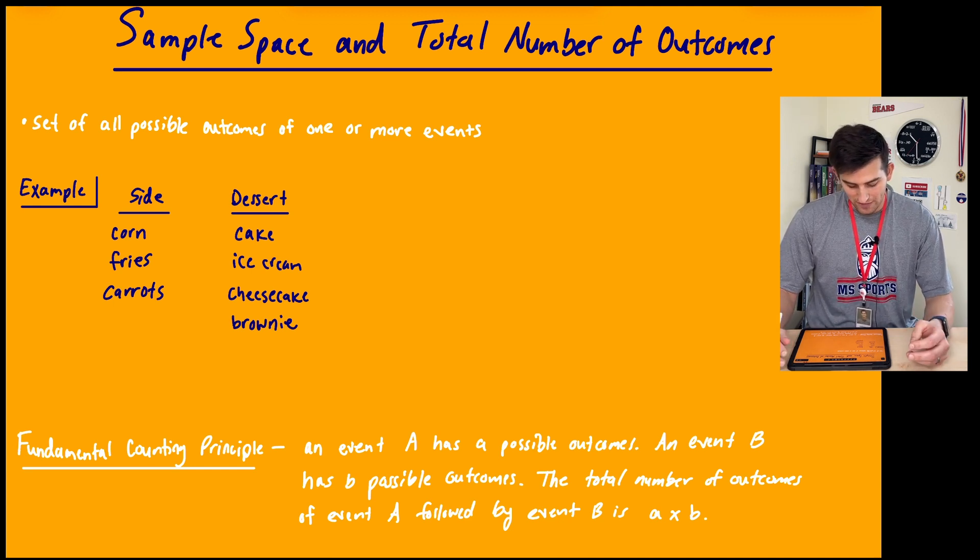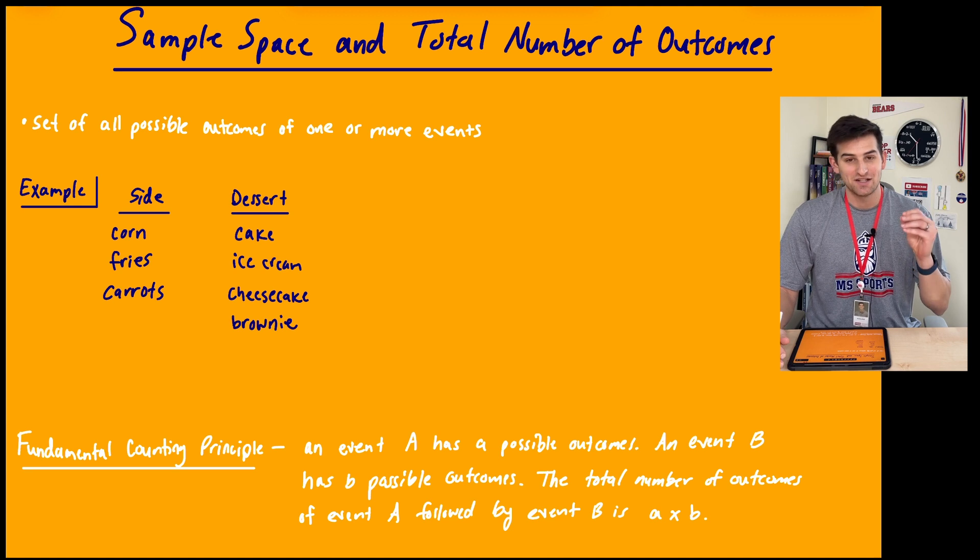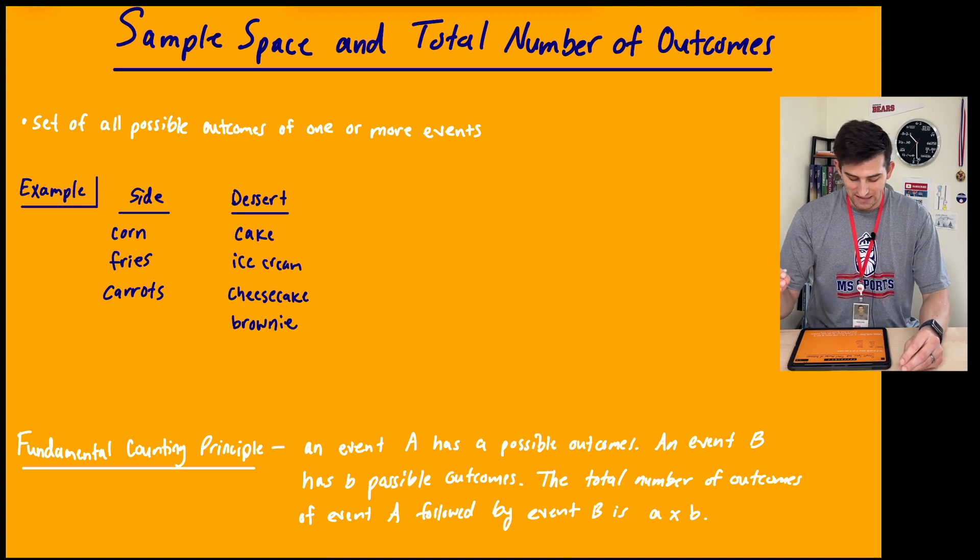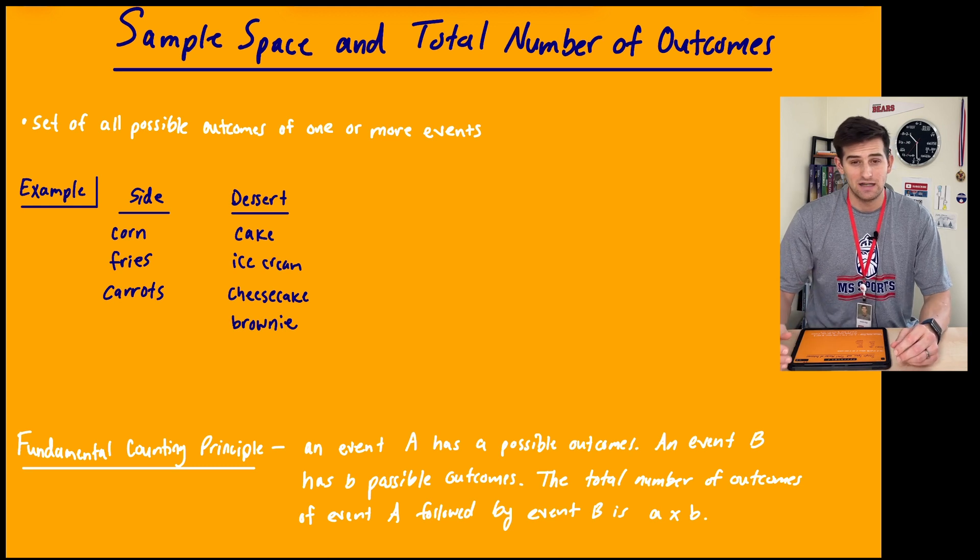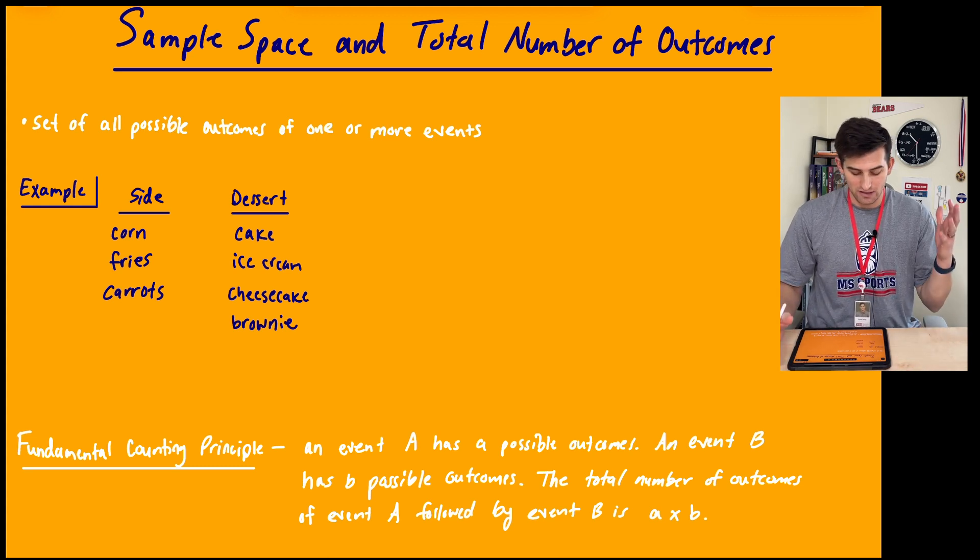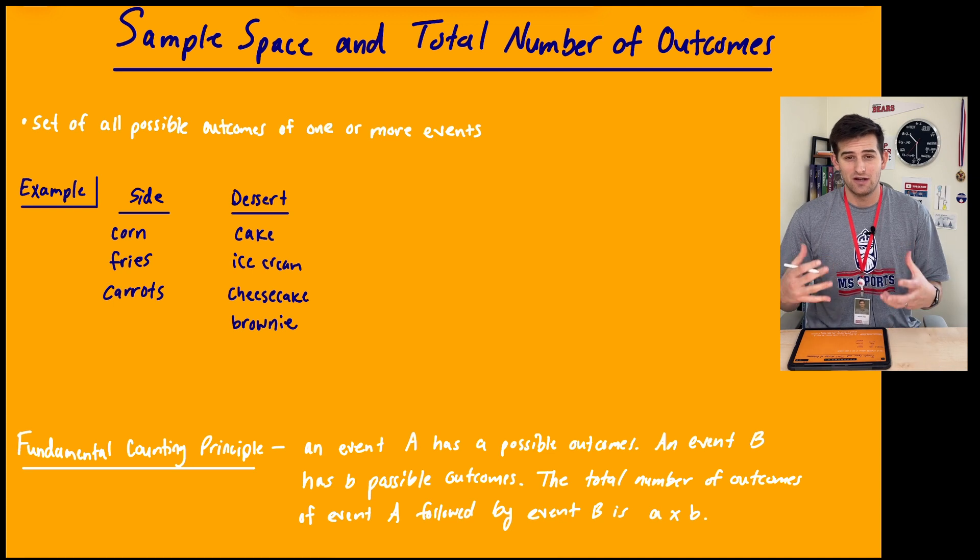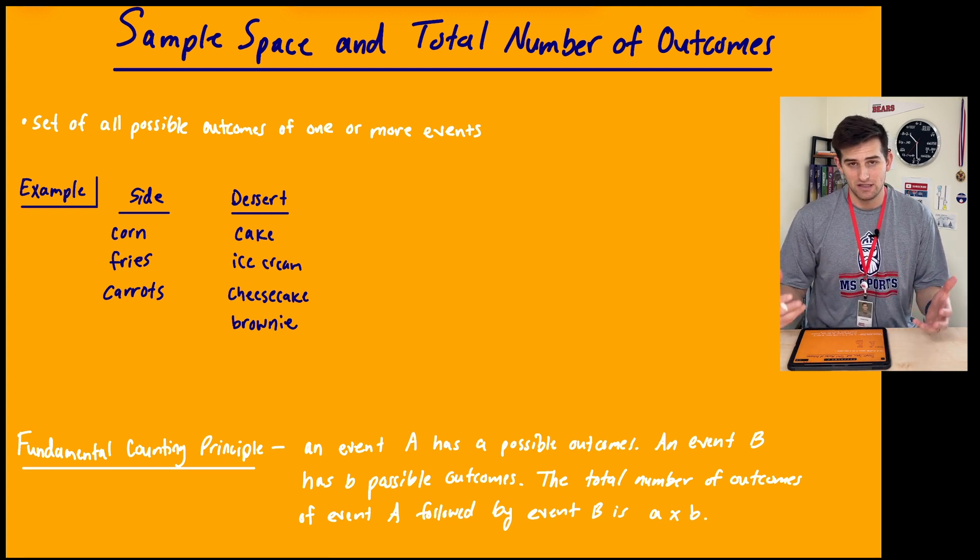So we have an example. We have some side dishes: corn, fries, and carrots, and we have some desserts: cake, ice cream, cheesecake, and brownie. Let's just say you're going to a restaurant and on the menu it says you can get one side and one dessert. We're trying to figure out how many combinations of sides and desserts we could possibly get.